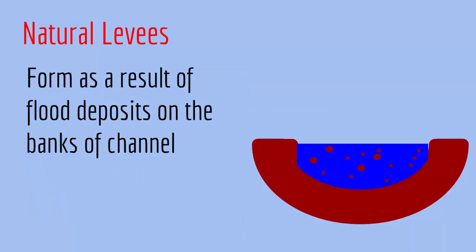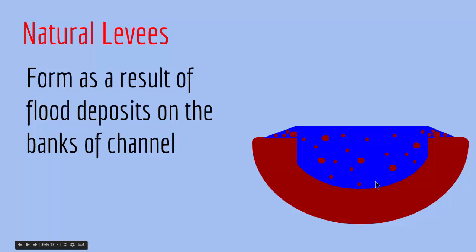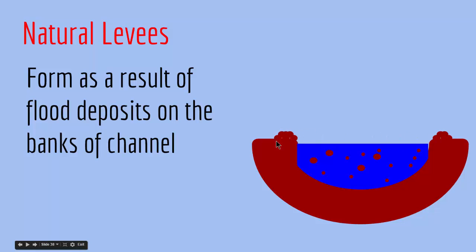The last type of depositional landforms is natural levees. Natural levees are built by years of successive floods and they are formed as a result of flood deposits on the banks of a channel. Most of the time they are found in meandering rivers. Imagine a cross-sectional area of a river where water flows through the channel carrying suspended material. When you have a flood, there is a sudden increase in the water and the suspended material goes up and comes to the sides. When the flood recedes, the suspended material is deposited on the sides of the channel, creating natural levees. This successive flooding and decrease of water in the channel creates natural levees over time.